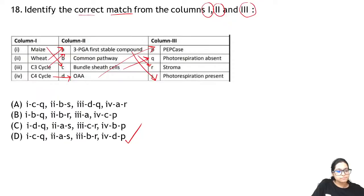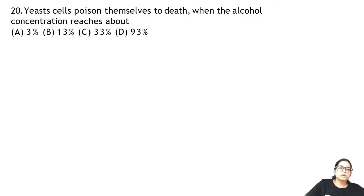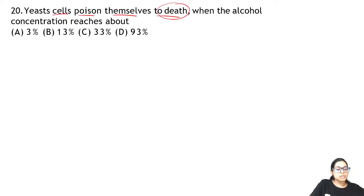Question 19: respiration takes place in all living cells of the plant. Many students think plants only do photosynthesis and not respiration, but plants also do respiration. Question 20: yeast cells poison themselves to death — Saccharomyces cerevisiae performs fermentation and makes alcohol. It keeps making ethanol until the alcohol concentration is so high that it causes its own death. That is about 13%.